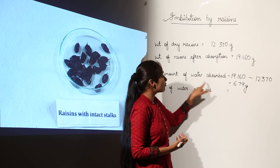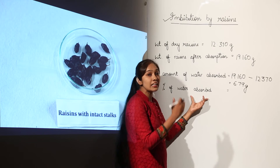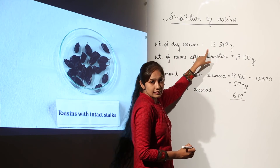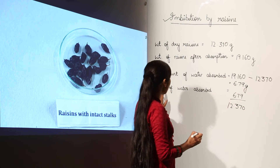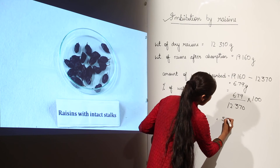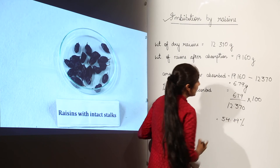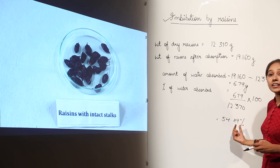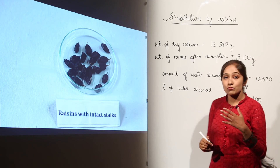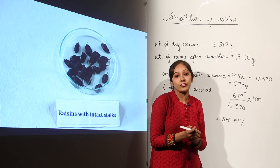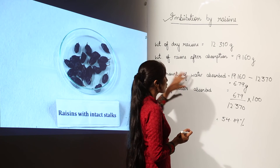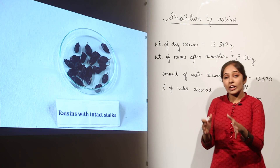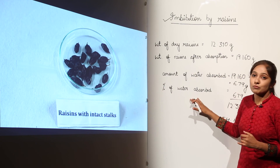To find the percentage of water absorbed, divide the amount of water absorbed (6.79 grams) by the weight of dry raisins (12.370 grams) and multiply by 100. This comes out to be 54.89%. So in this activity, the amount of water absorbed is 6.79 grams and the percentage of water absorbed is 54.89%. Whenever you perform such an activity, use this formula to calculate both the amount and percentage of water absorbed.